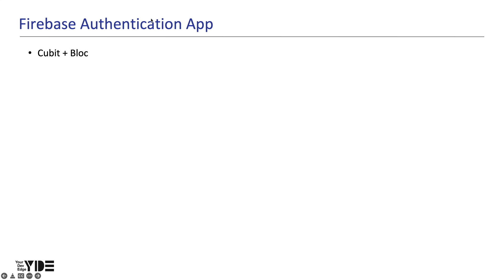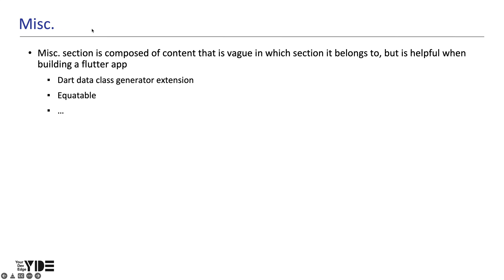The Miscellaneous section is composed of content that is vague in which section it belongs to, but is helpful when building a Flutter app. For example, the .data class VS Code extension or generating variables. This is a section that will continue to grow in the future.